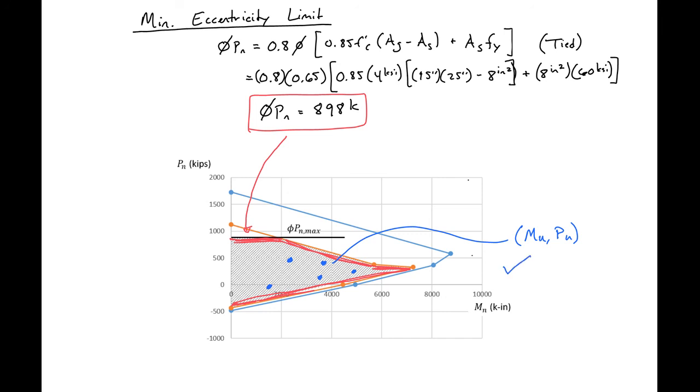If we had any points that would fall outside of this factored diagram, then our column would be no good. And we'd have to either increase the size of the column or increase the amount of steel.